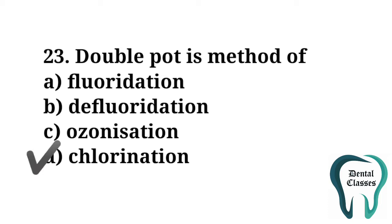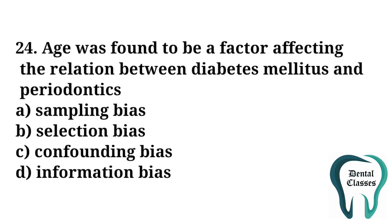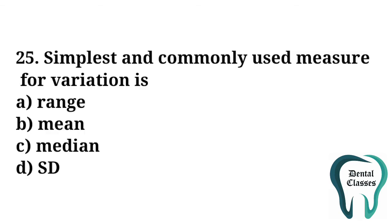Double pot is a method of chlorination, so the answer is D. Age was found to be a factor affecting the relation between diabetes mellitus and periodontitis. Here the bias is confounding bias — that is the answer is option C.